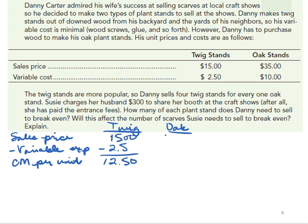The oak stands are more expensive to make, but they also have a higher retail selling price of $35, with a $10 variable cost per unit. So that gives a $25 contribution margin from the oak stand.